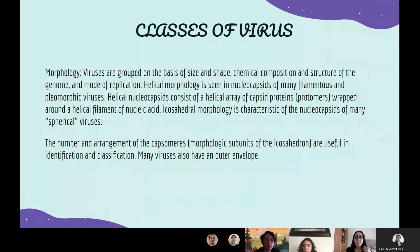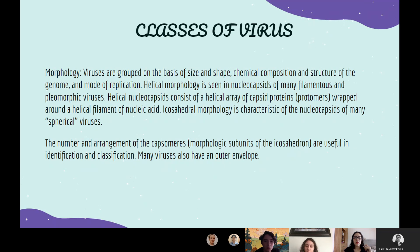Classes of viruses: Morphology. Viruses are grouped on the basis of size and shape, chemical composition and structure of the genome, and mode of replication. Helical morphology is seen in nucleocapsids of many filamentous and pleomorphic viruses. Helical nucleocapsids consist of a helical array of capsid proteins wrapped around a helical filament of nucleic acid. Icosahedral morphology is characteristic of the nucleocapsids of many spherical viruses. The number and arrangement of the capsomeres are useful in identification and classification.